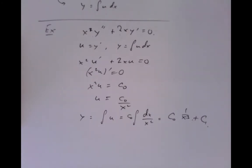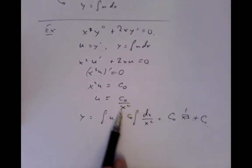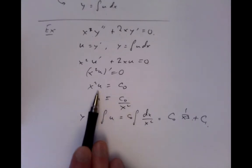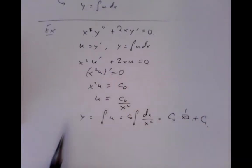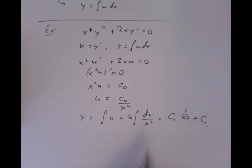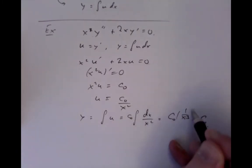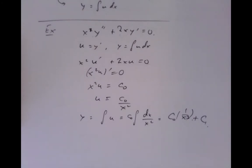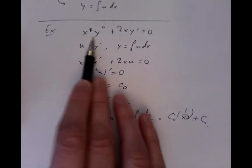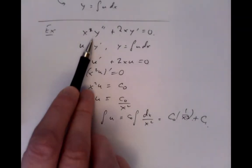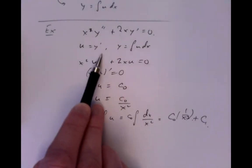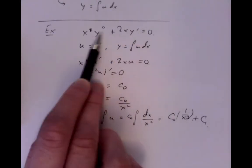Plus some other constant of integration — I may have changed my constant here to absorb things and make it a bit easier to write. Now we might still miss some kind of solution because maybe in this process I assumed this was a non-zero constant when I divided. But checking: I'm okay. So that should give me the general solution, and that should solve the differential equation. So that gives us an example of computing with non-constant coefficients where there's no y in the problem.